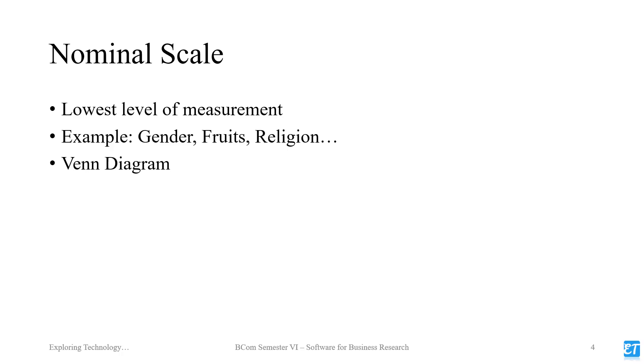There is no order. There is no importance. For example, fruits: apple, orange, banana — these categories have no inherent order.